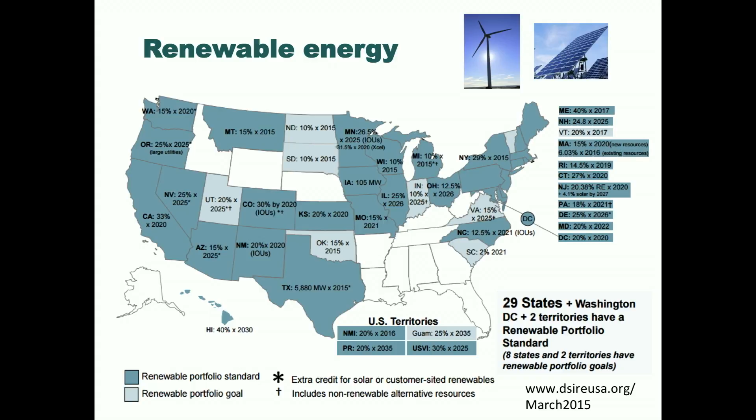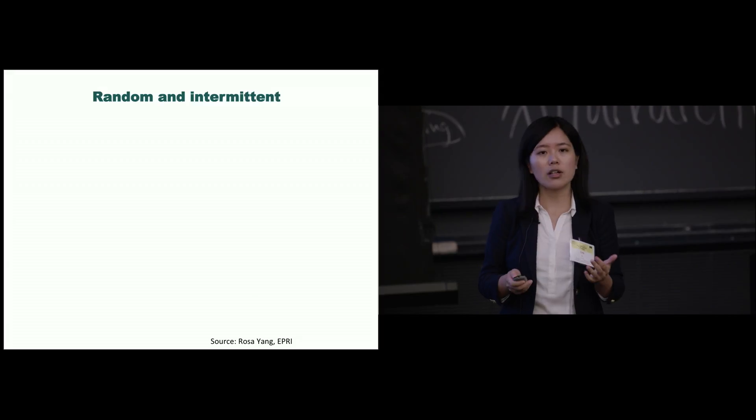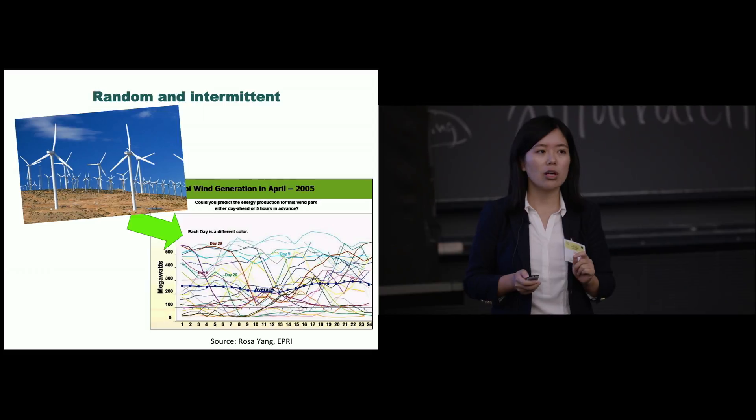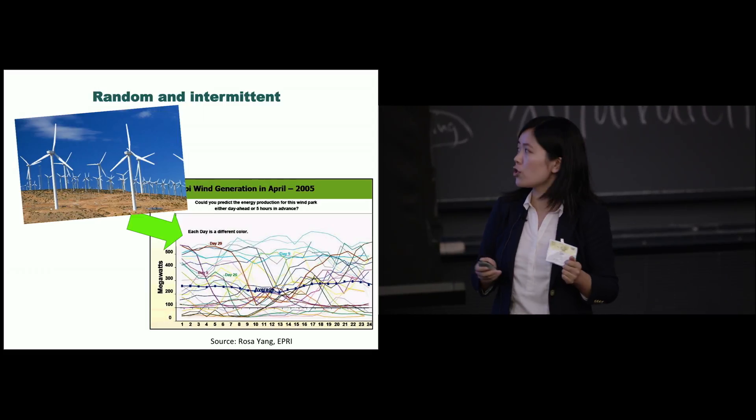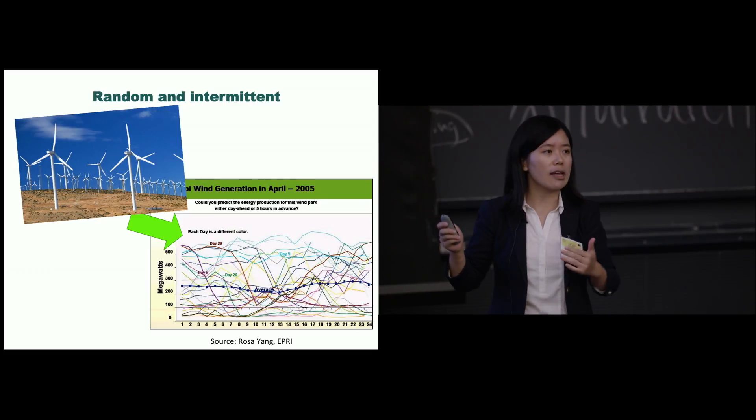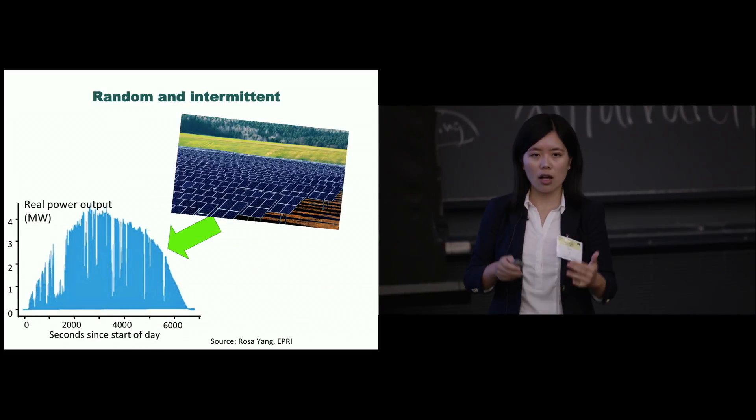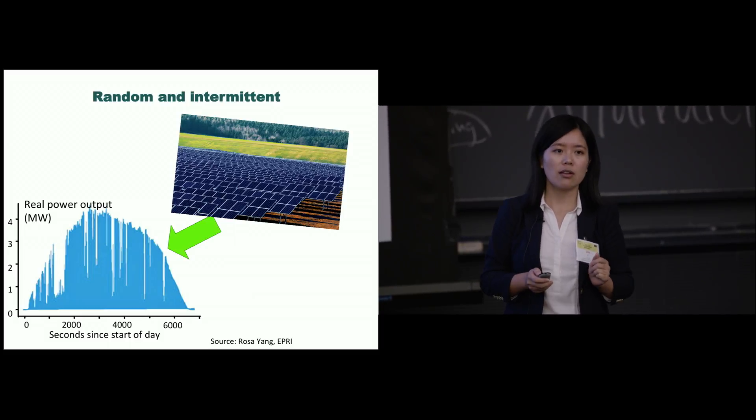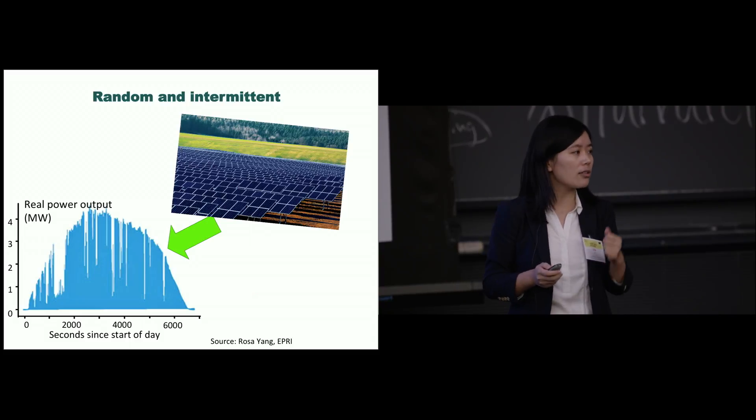California wants to have 33 percent renewable energy usage by the end of 2020. There's only four years to go. So what's the problem? For this new generation, generation is very different from the traditional power plant. How much is generated is not controlled by human. It has a lot of uncertainty. It's random. This is one example about the wind. For the wind generation, here we plot the generation for different days. We almost didn't see any pattern. And for the solar, if cloud comes, the solar generation can drop immediately within a few seconds.